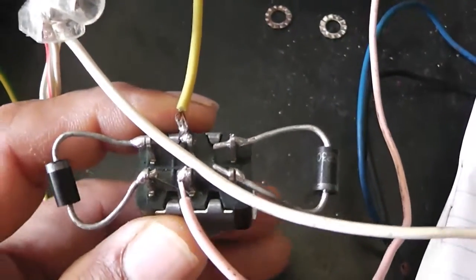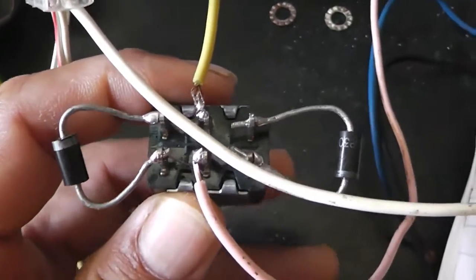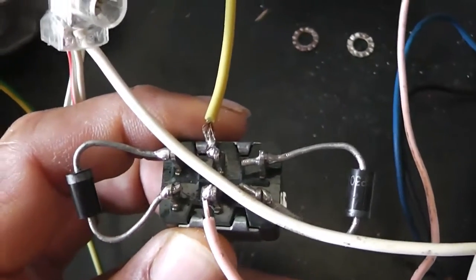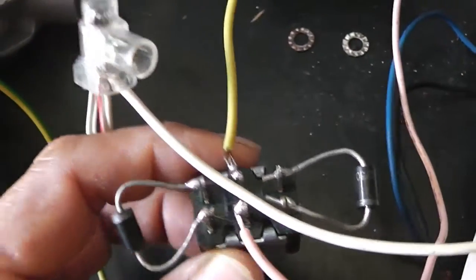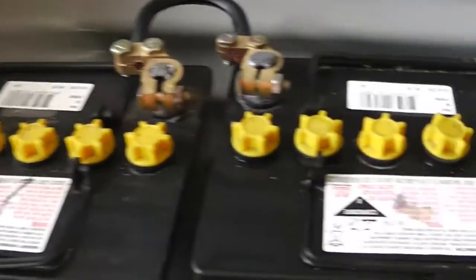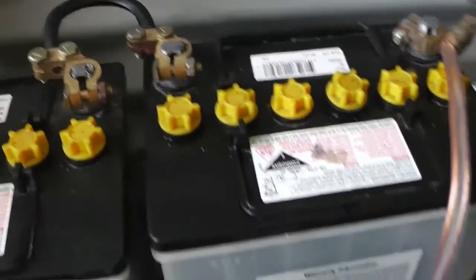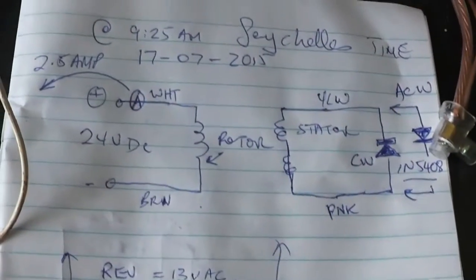These diodes, of course, are connected directly across the stator coil. The rotor coil goes straight to 24 volt DC, which is two 12 volt batteries connected in series. You can get up to 25, 25.5, 26 volts I guess.